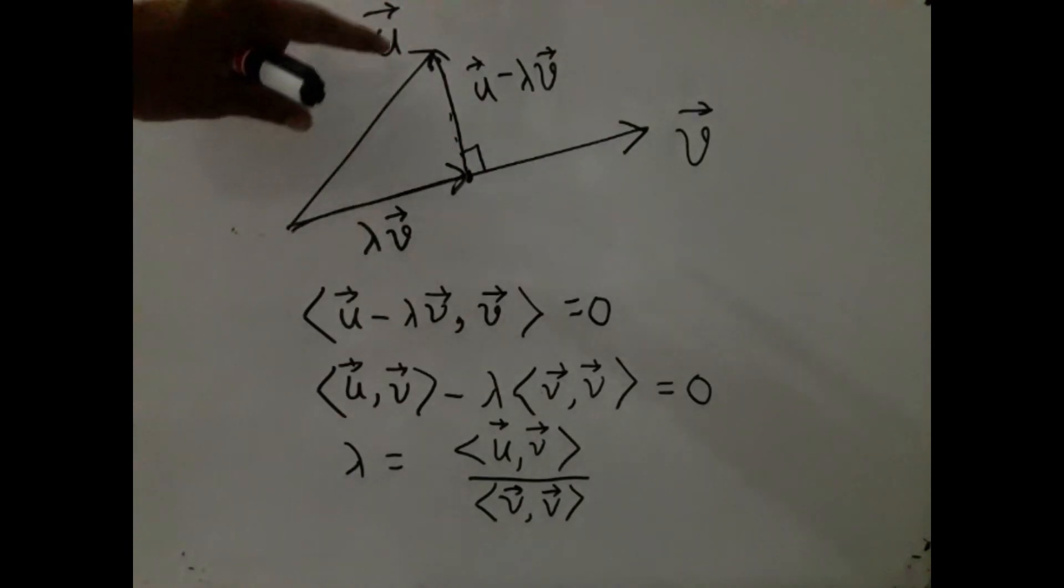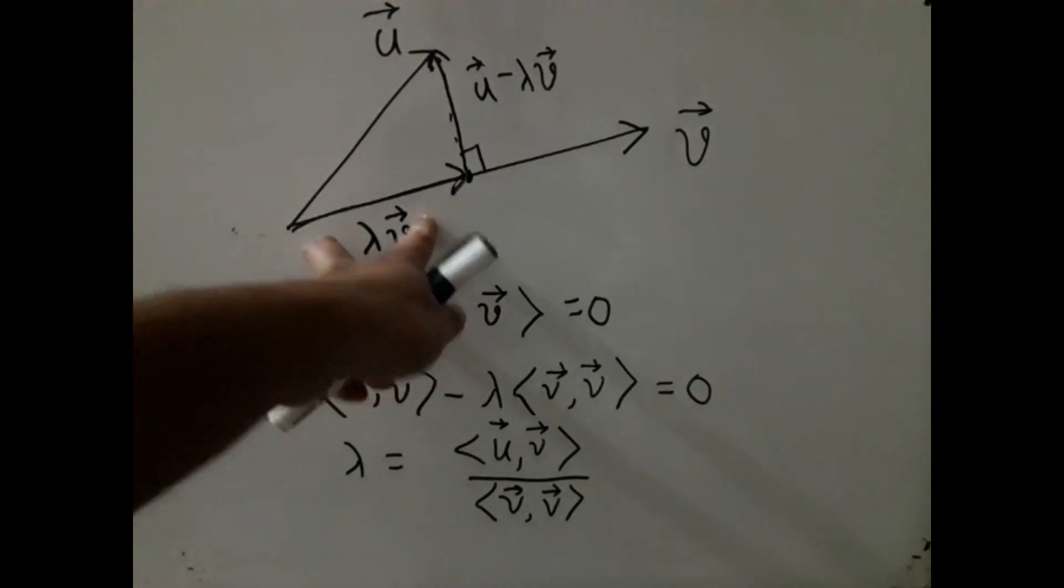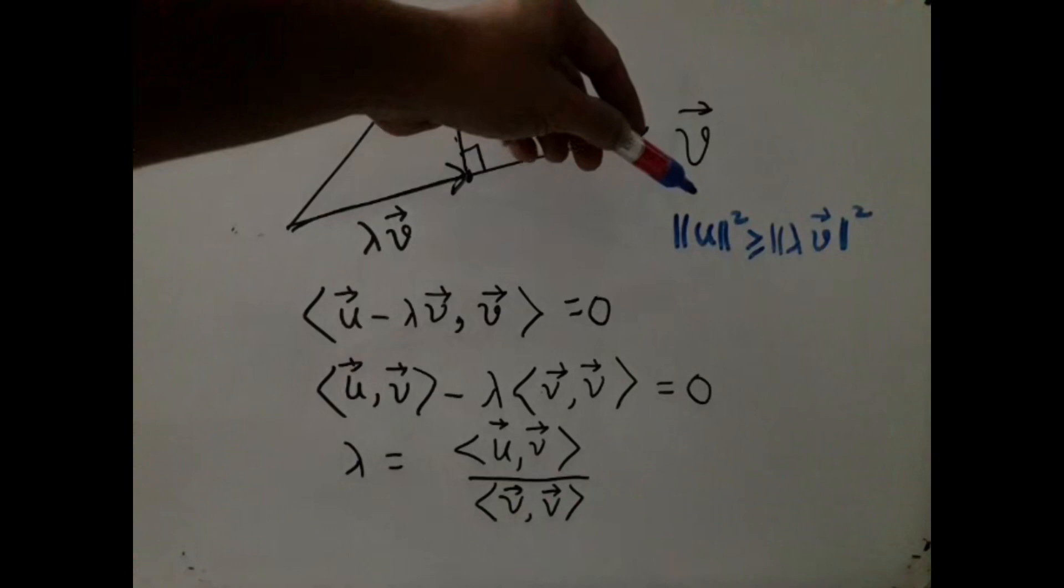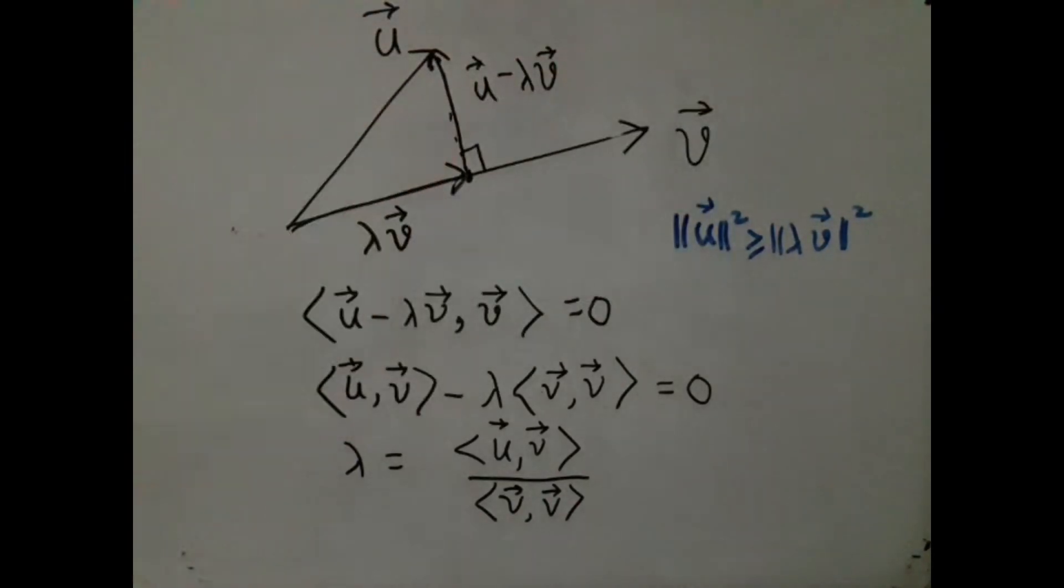So I am trying to write that this square is greater than or equal to that square, and why is that? Because norm squared of u is norm squared of this component plus norm squared of that component - that is Pythagoras, which we know is valid in any inner product space. So we can write ||u||^2 ≥ ||λv||^2.